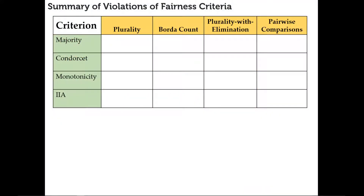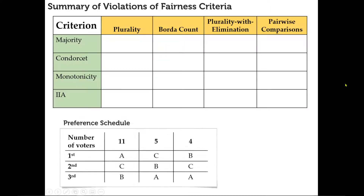This table here summarizes the violations of fairness criteria. It looks at the voting methods we've covered and indicates where each always meets a criterion or where it can violate it. Let's take a look at this preference schedule, which details a race between candidates A, B, and C with a total of 20 votes. We're going to see how each voting method does — whether it violates the majority criterion.